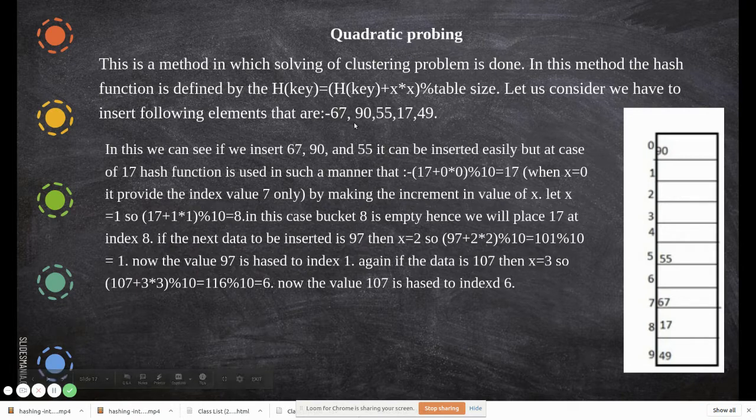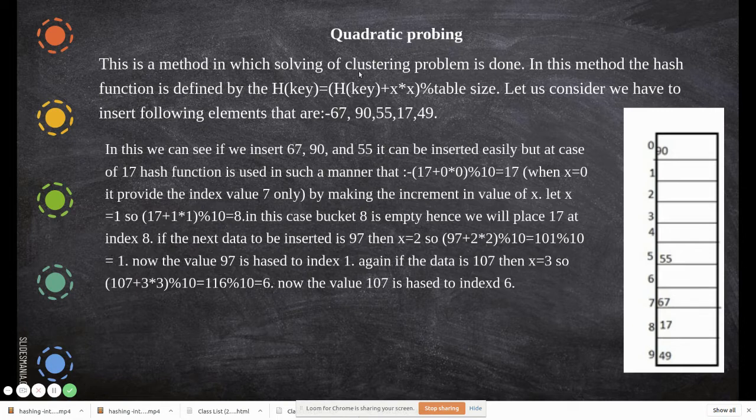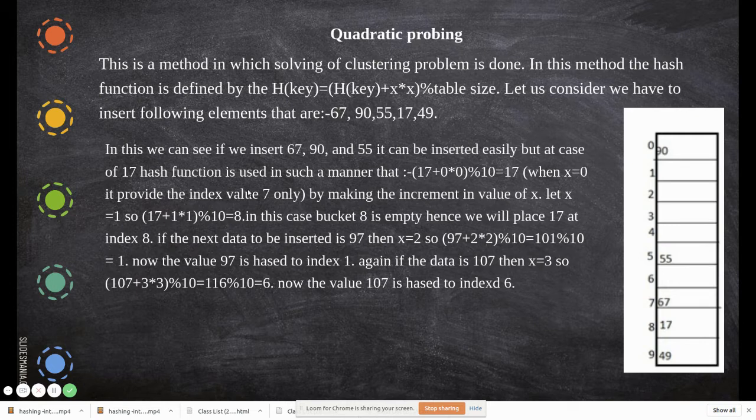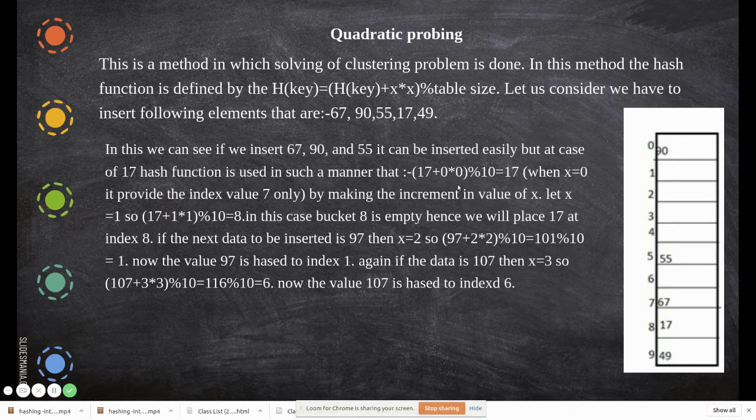We have 67, 90, 55, 17, and 49. Initially when you divide 67, you have to generate 67's hash value. In the case of 17, the hash function is used in such a manner: (17+0×0) mod 10. Let's consider 17 first.